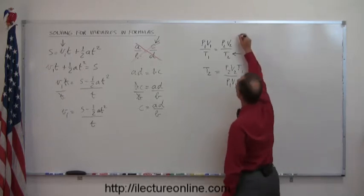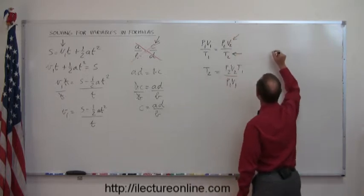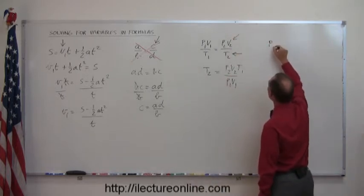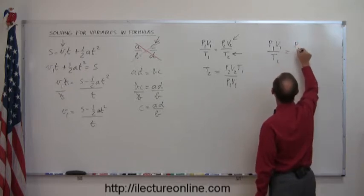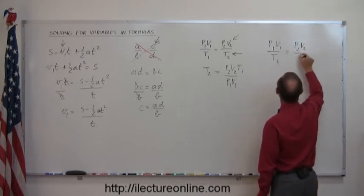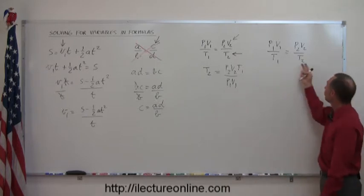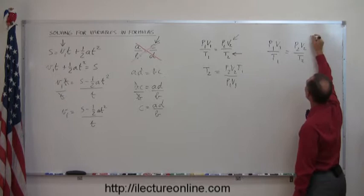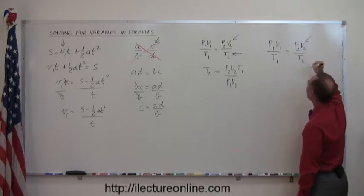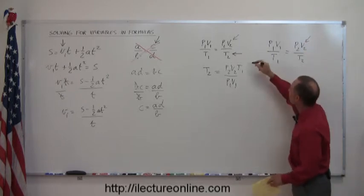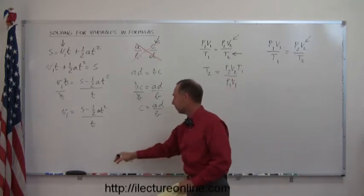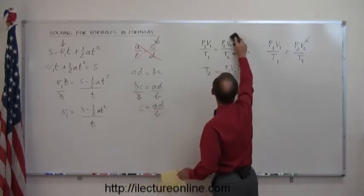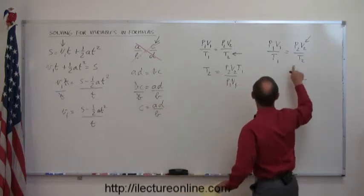I'll do this one again but let's say this time we want to solve for v2. So let's rewrite this problem: p1 v1 over t1 equals p2 v2 over t2. Now notice what I could do. I rewrote the same problem but this time I want to solve for v2.